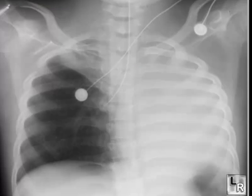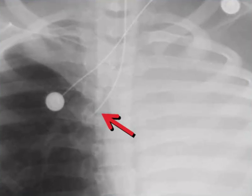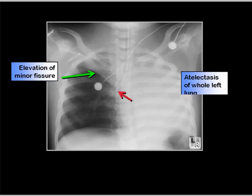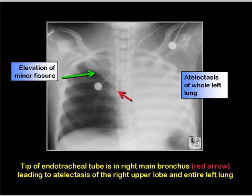Following the insertion of an endotracheal tube, this image was obtained. The tip of the endotracheal tube is in the right main bronchus. That has produced atelectasis of the right upper lobe, as evidenced by increased density in the right upper lobe and elevation of the minor fissure, and complete atelectasis of the left lung.